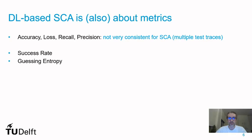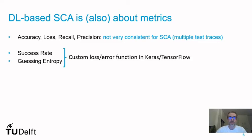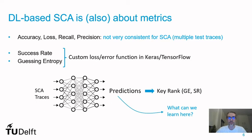Using correct metrics is very important for SCA with deep learning. Supervised metrics like accuracy, loss, recall, and precision are not very consistent for side-channel analysis — many works already show this. What we have to use are the common side-channel metrics such as success rate and guessing entropy, either as a custom loss function in common libraries or computed independently from the training process. Success rate and guessing entropy are computed from the predictions obtained from side-channel traces.